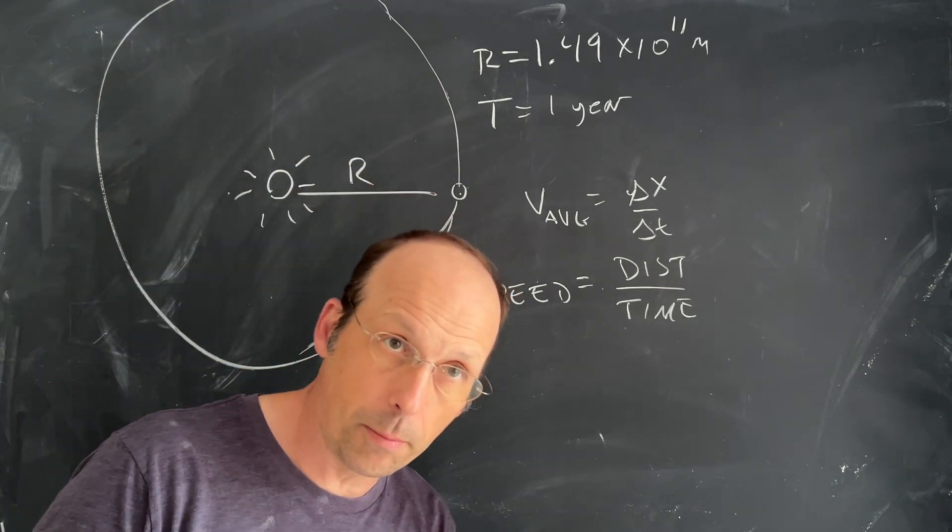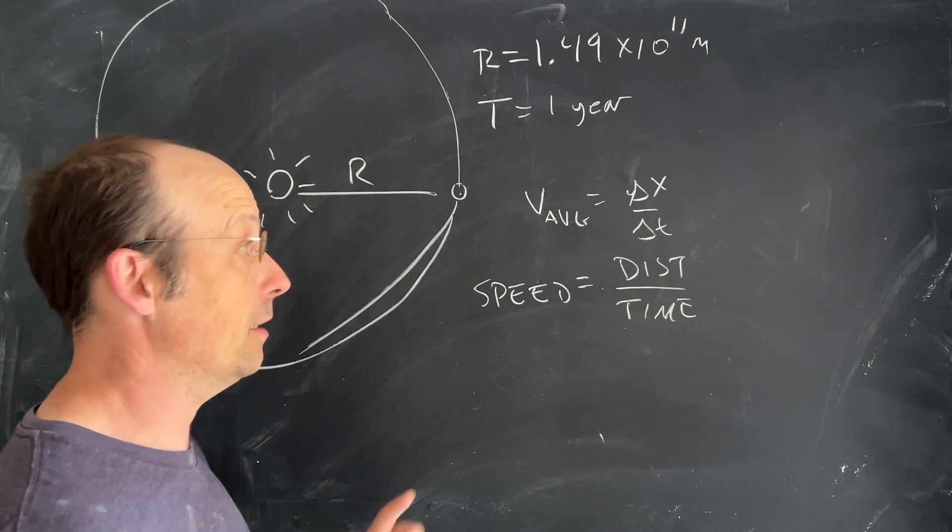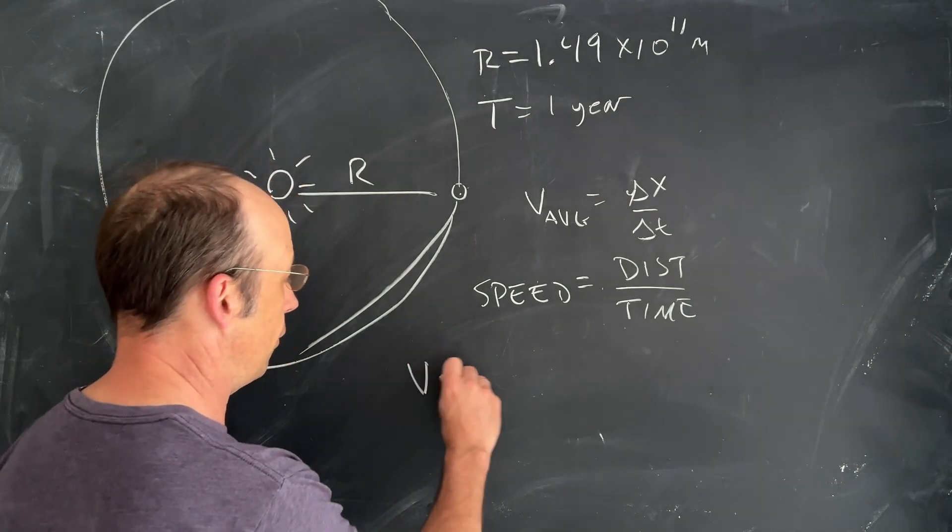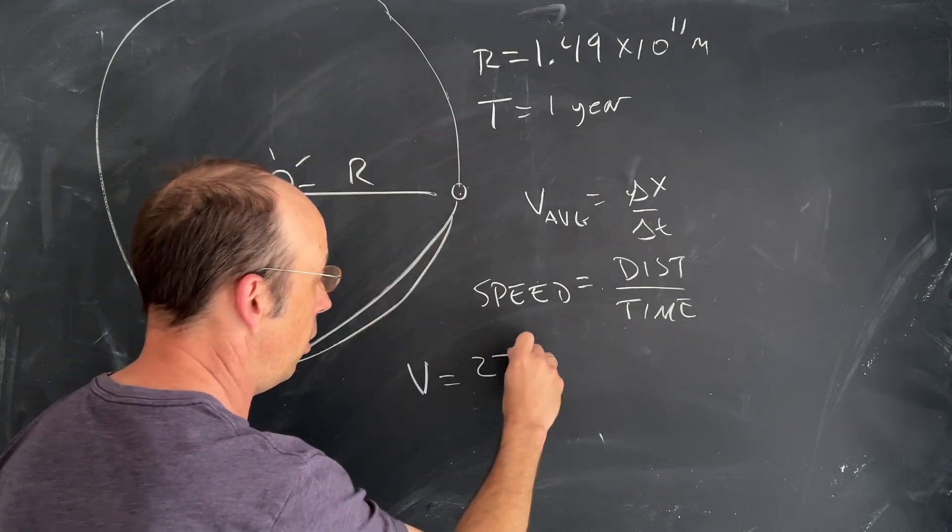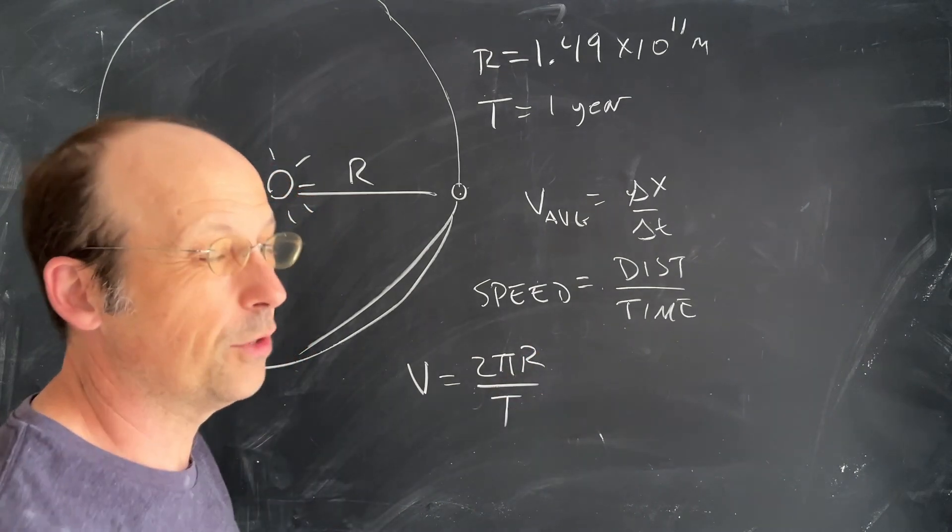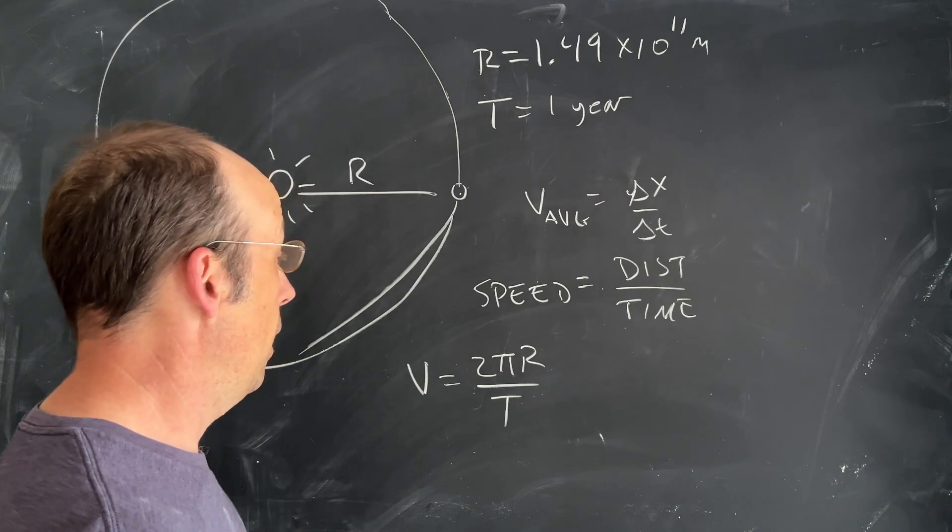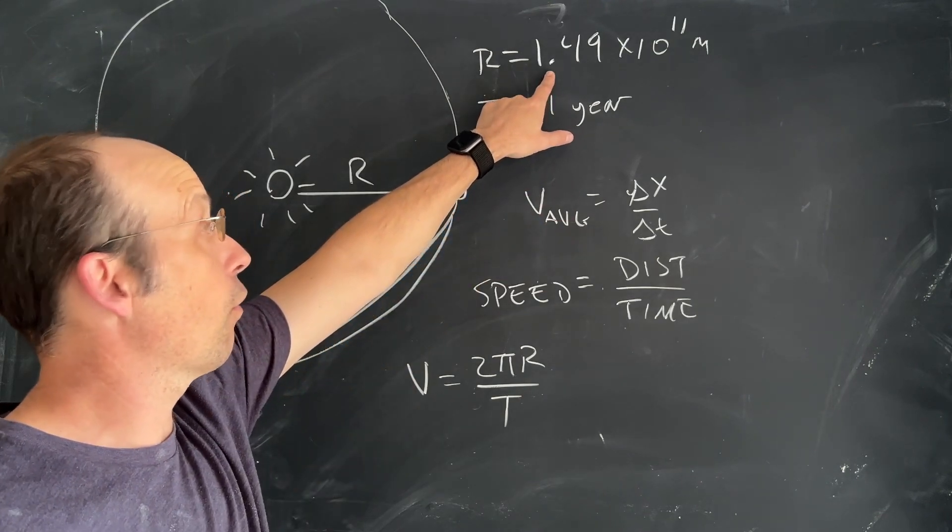Here we have the Earth moving in a mostly circular orbit. We can calculate that distance, and we know the time is one year. I'm going to write it as v, even though it's speed. The distance around a circle is 2πr divided by the period of orbit, which we call T.